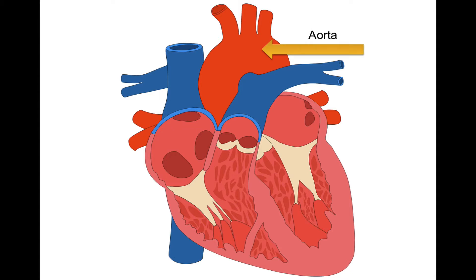Then we have the aorta. This actually has several different branches, which I'll talk about in a later video. But basically, blood is leaving the left ventricle to go into the aorta and go to the entire body — fully oxygenated and under high pressure as it leaves the heart through the aorta.